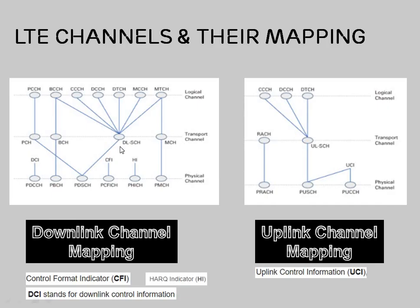On the left side we have the downlink channel mapping and on the right side we have the uplink channel mapping. In the uplink there are fewer messages and fewer channels, while in the downlink there are more messages and more channels.